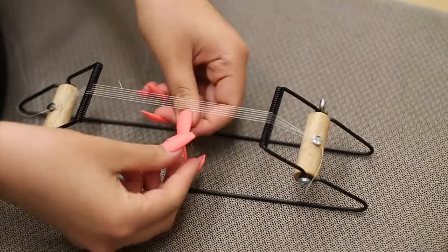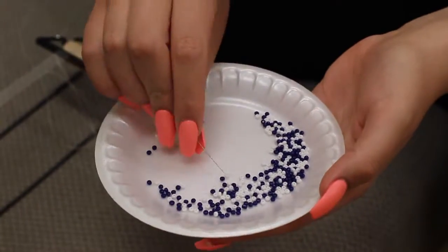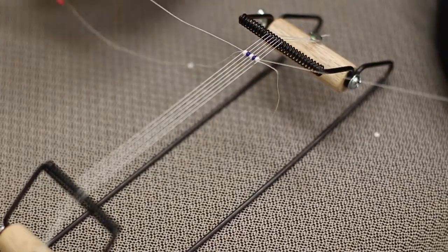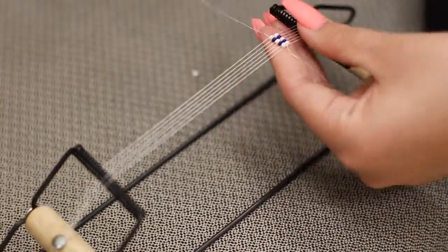Tie your string to the outside string on your loom and pull the string under the loom. Get your beads and push them through the strings. Then put the needle through them and put your string back under the loom. Repeat this process until you reach your desired length.